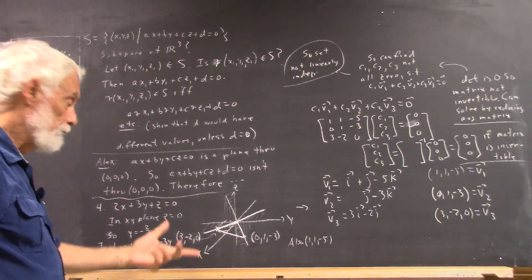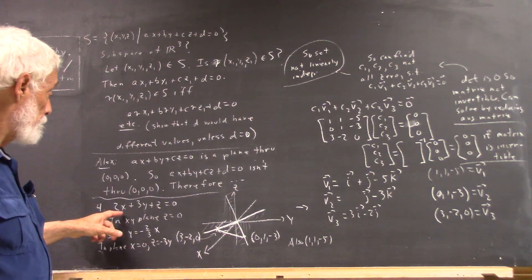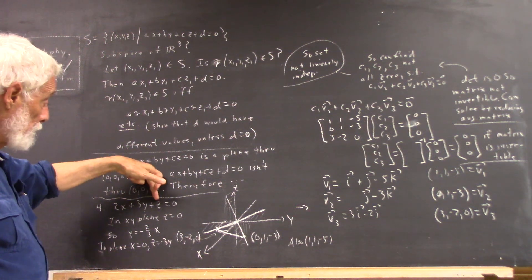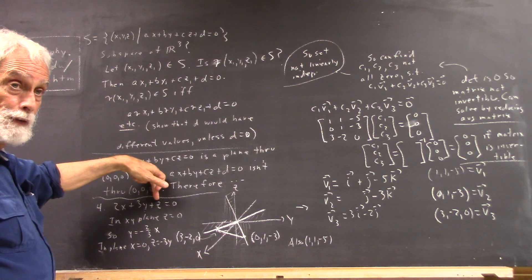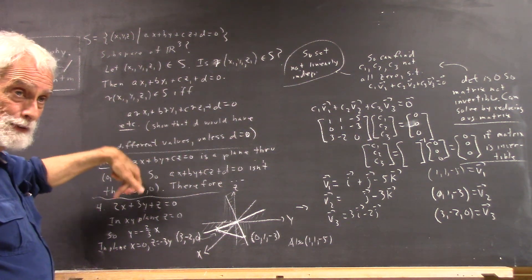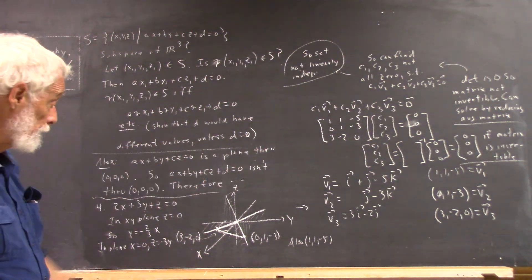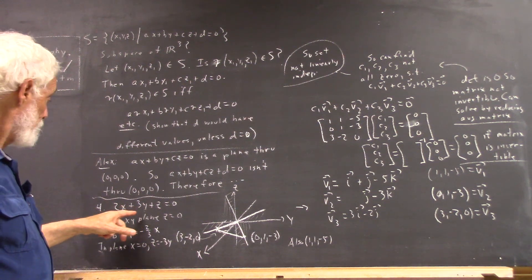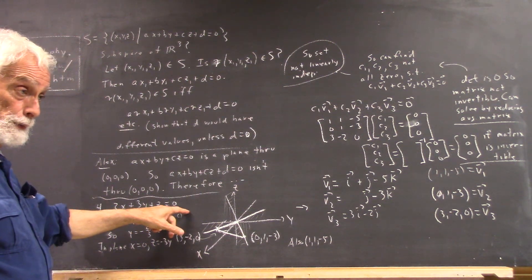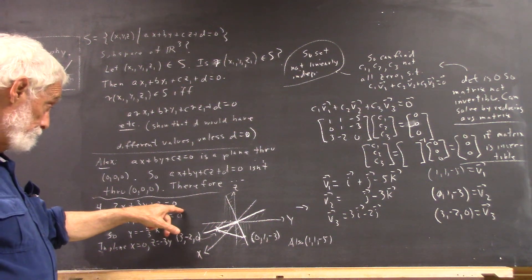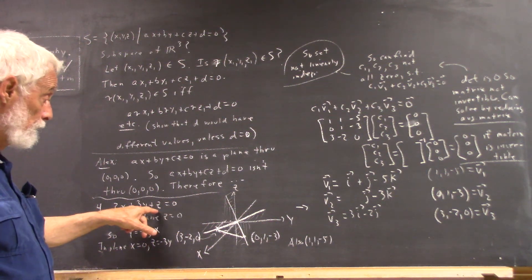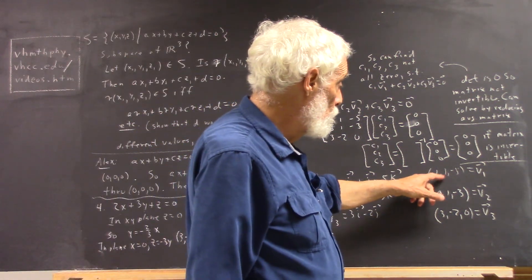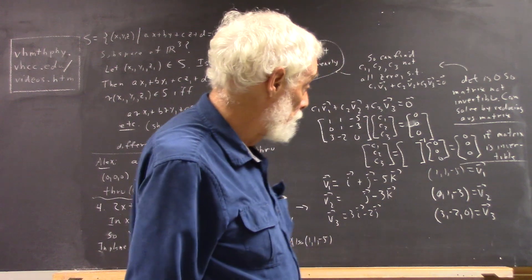So it's easy to get a point. We could just pick X and Y, any values we want for X and Y, and then we can solve for Z, and at that point we'll have a set of XY and Z coordinates for a point that's on the line. So for example, if X is 1 and Y is 1, you get 2 plus 3 plus Z equals 0, so Z is negative 5. That'd be 5 plus Z equals 0, Z equals negative 5. So the point 1, 1, negative 5 is one of our points, so I'll call that our vector V1.